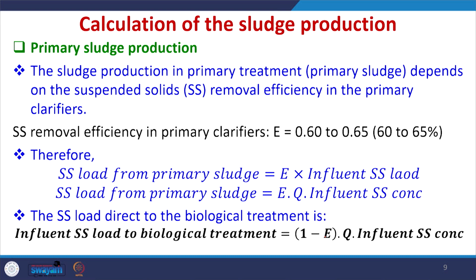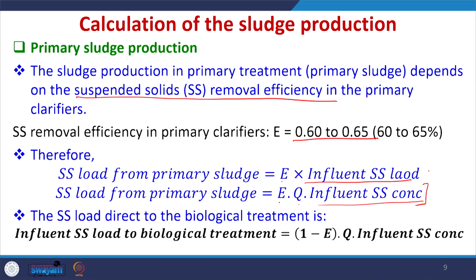For primary sludge production calculations: sludge production in primary treatment depends upon the suspended solids removal efficiency in the primary clarifiers. The SS removal efficiency in primary clarifiers varies in the range of 60 to 65 percent. Therefore SS load from primary sludge equals efficiency (E) times influent SS load, or E times Q times influent SS concentration. The SS load directed to biological treatment will be (1 minus E) times Q times influent SS concentration. This is straightforward to calculate.